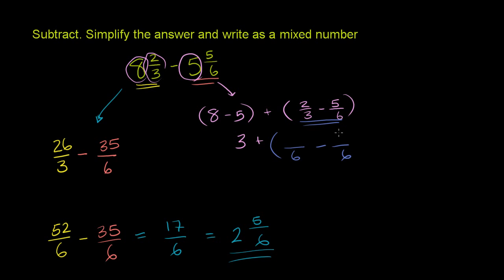5 sixths already has 6 as a denominator. We don't have to do anything there. To go from 3 to 6 in the denominator here, we have to multiply by 2. So let's do the same thing with this 2. 2 times 2 is 4. So this results in 4 sixths minus 5 sixths, which will give us, and we haven't covered it yet, a negative number. If you take 5 from 4, you're going to go below 0.